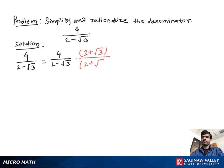Multiply both numerator and denominator by 2 plus square root 3. Then we have 4 times 2 plus 4 times square root 3 in the numerator, over 2 times 2 which is 4, plus 2 times square root 3 minus 2 times square root 3.